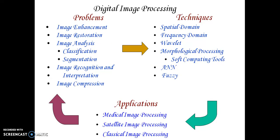What is digital image processing? Processing a digital image using a digital computer is called digital image processing. The problems we address include: image enhancement, image restoration, image analysis, classification and segmentation, image recognition and interpretation, and image compression.